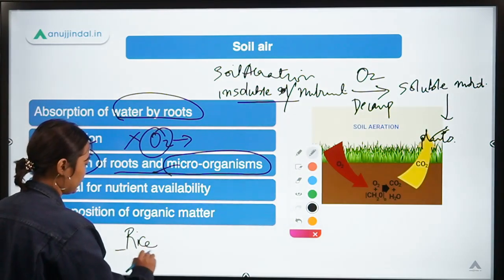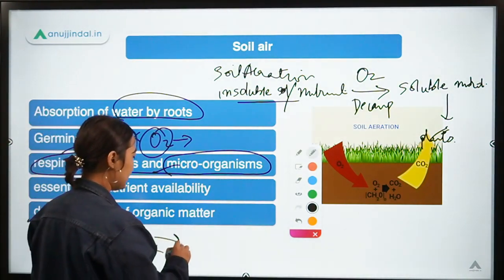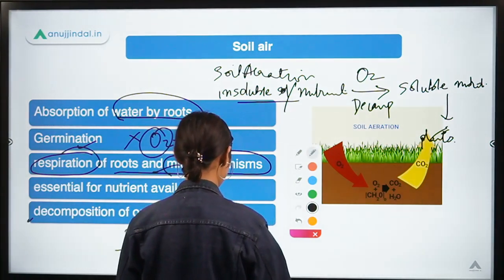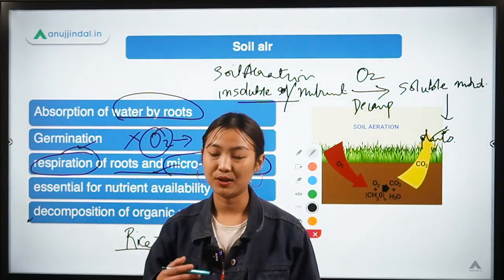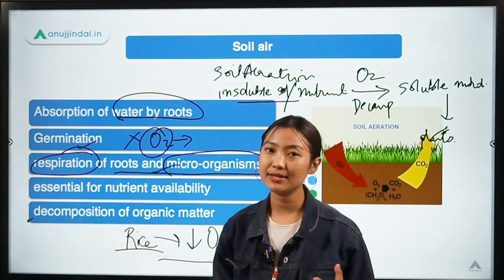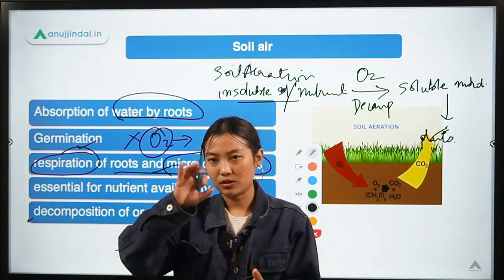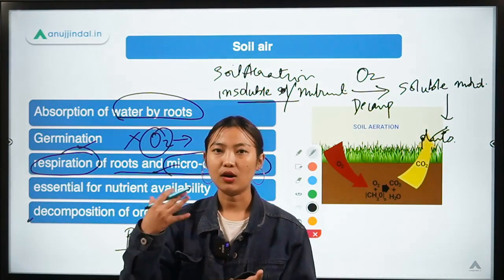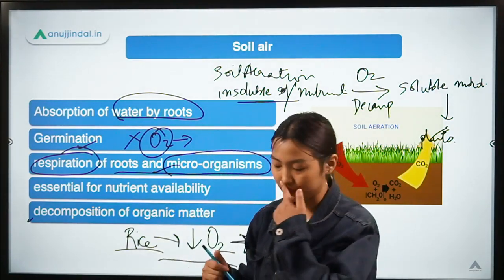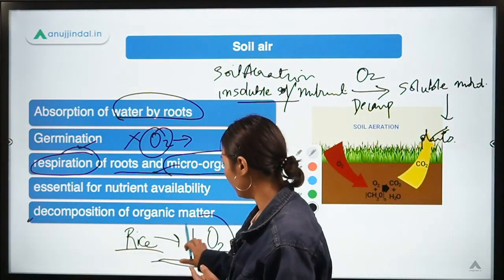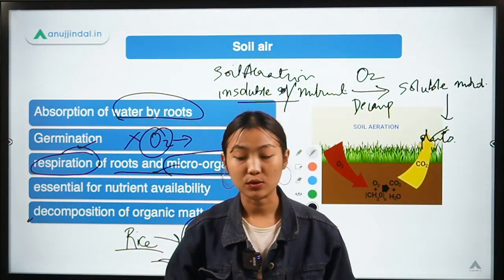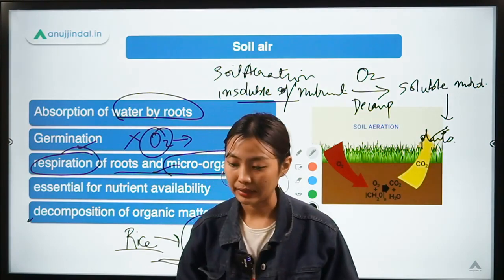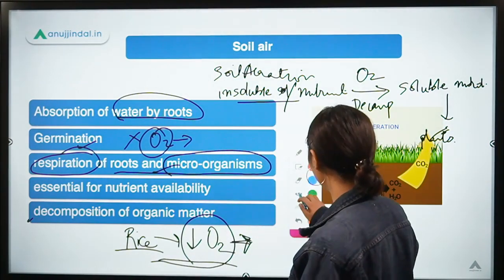An example of how crops are affected by soil air: rice is a crop that needs less oxygen because it is usually submerged in water. When there is a high level of water, the oxygen level drops. On the other hand, crops like legumes, potatoes, or tobacco need higher amounts of oxygen for normal growth and development.